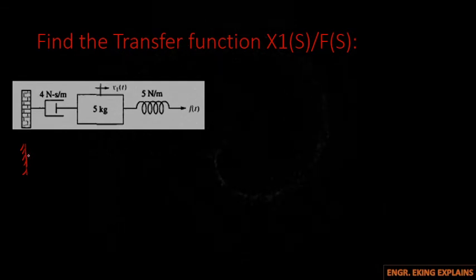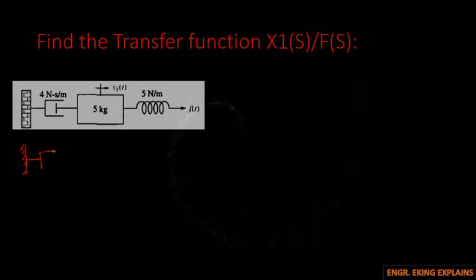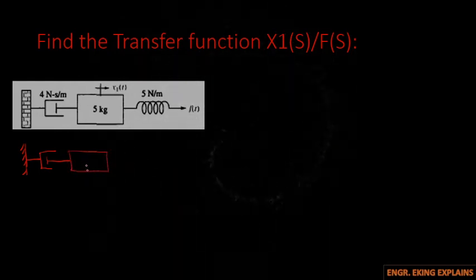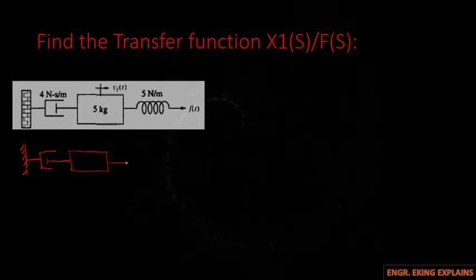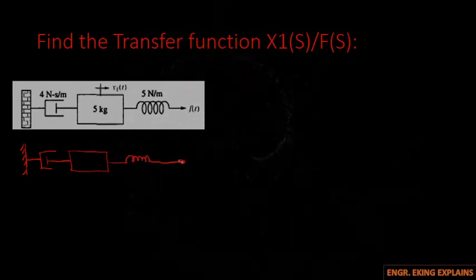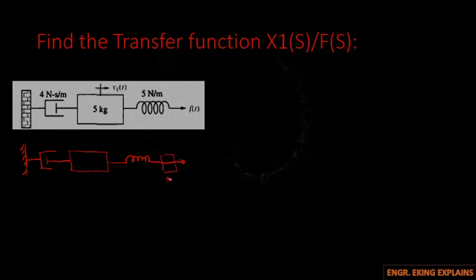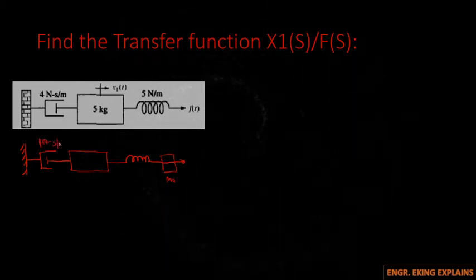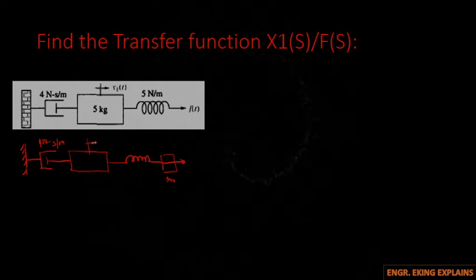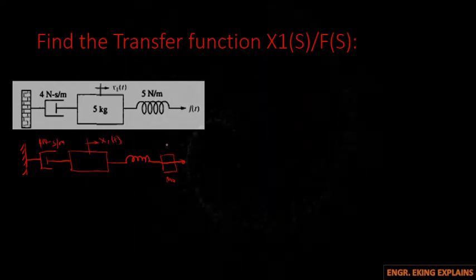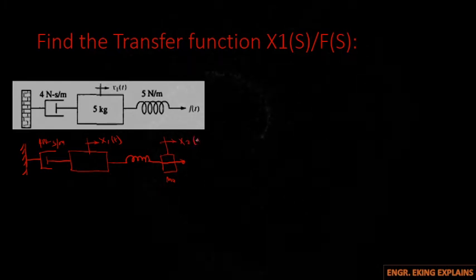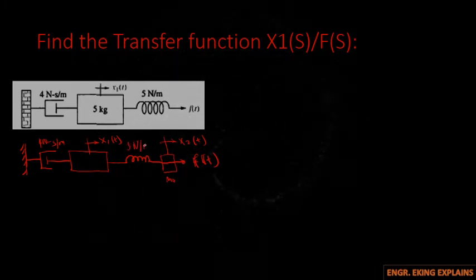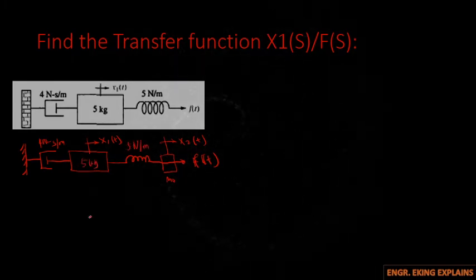So this one will be our 5 kilogram mass. Then we put here an imaginary M0. This will be our 4 newton-second per meter damper. This will be our x1(t), and this will be x2(t). Then we have here our f(t). This one will be 5 newton per meter, and this will be our 5 kilograms.